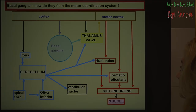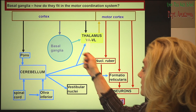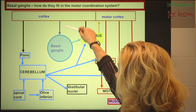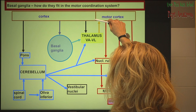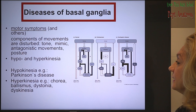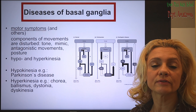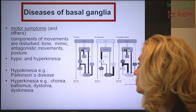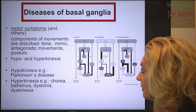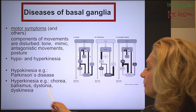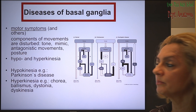At the end, let's see how this whole system fits into the motor coordination system. You will have a separate lecture on that, and you'll see this picture many times. The cerebellar loop and the basal ganglia loop both work through the thalamus and back to the motor cortex. Now let's see some examples of diseases. Motor symptoms will dominate, but there are other symptoms as well. The components affected include tone, facial expression, agonistic and antagonistic movement, posture, and hypo- or hyperkinesia. Among hypokinetic diseases, Parkinson's disease is the one you must know — chorea is striatal degeneration.